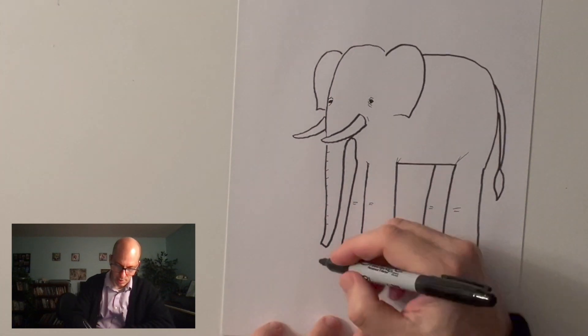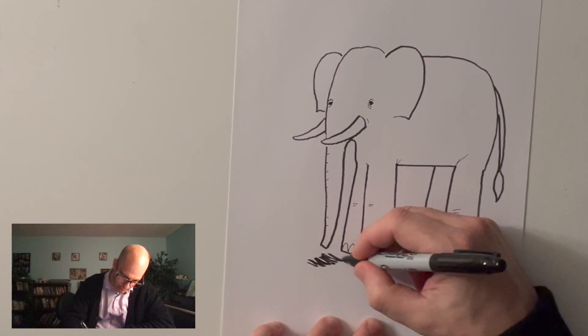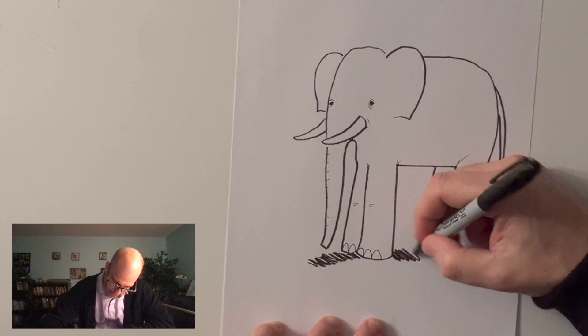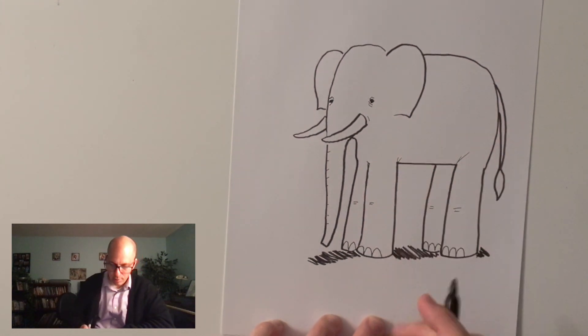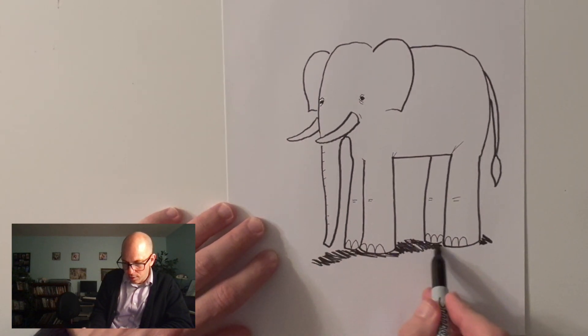Elephants live in Asia and Africa. They tend to live places where it's really hot and sunny. So I'm going to go ahead and put some shadow in here to indicate that there's a lot of sun in this elephant's world.